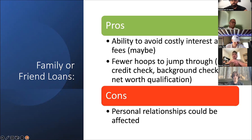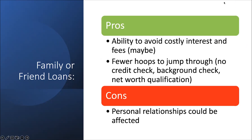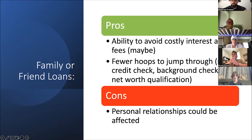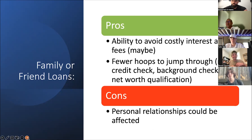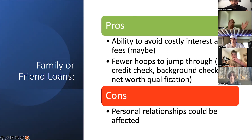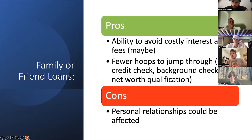The pros of going to friends or family are the ability to avoid costly interest rates and fees — though sometimes your uncle or stepfather is very in tune with where interest rates are. There are fewer hoops to jump through — no credit check, background check, or net worth qualification. The cons are that personal relationships could be affected. And as Julian points out, it's not just about losing the relationship — because they've loaned you money, they may want to have a say in how you do the project. There is a personal cost associated with doing business with friends and family.